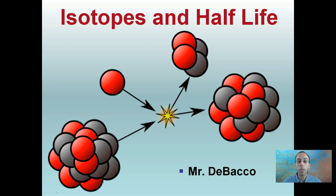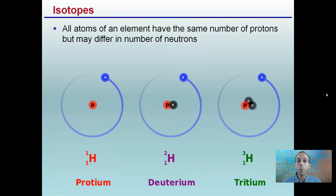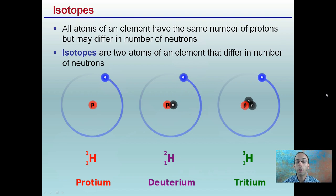Here we're going to look at isotopes and half-life. First off, we've got to define what an isotope is. All atoms of an element have the same number of protons, which is an important thing to remember, but may have a different number of neutrons. Isotopes are two atoms of an element that differ in the number of neutrons.